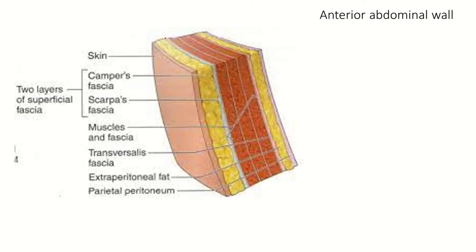Now the superficial fascia of the abdomen. This is the skin. This is the fatty Camper fascia, and this is the membranous Scarpa fascia.